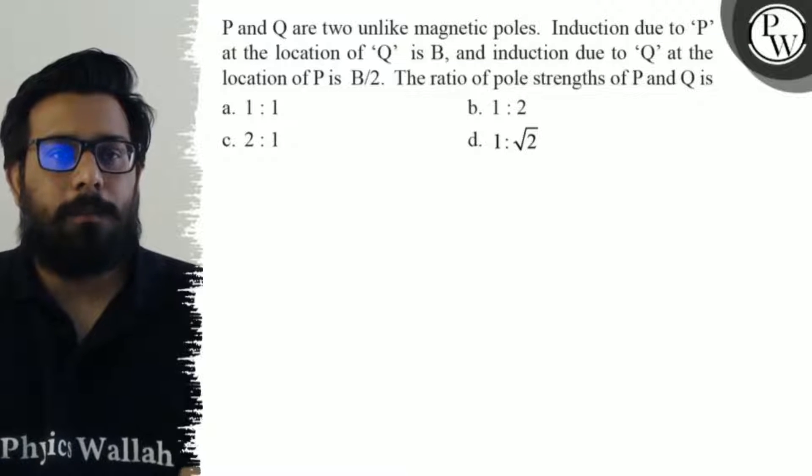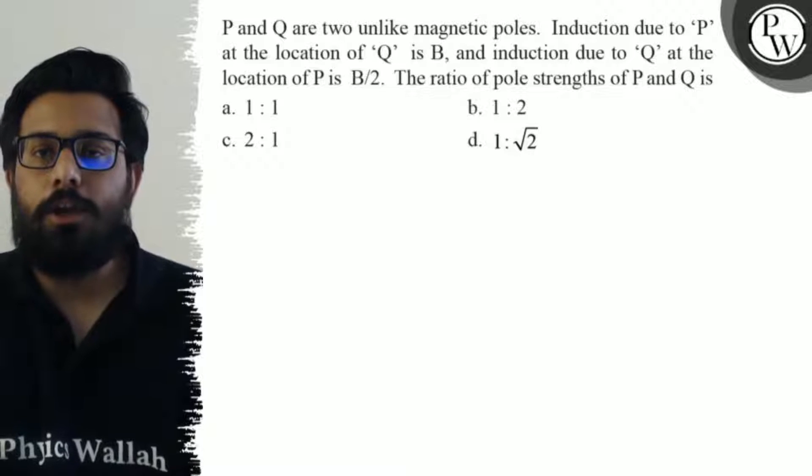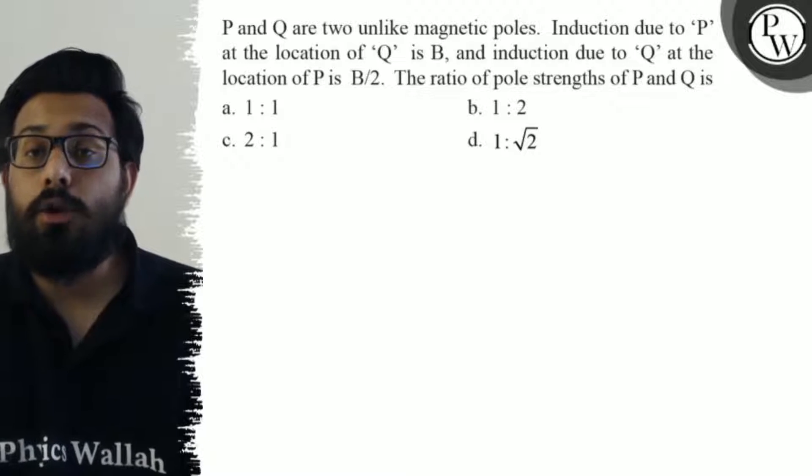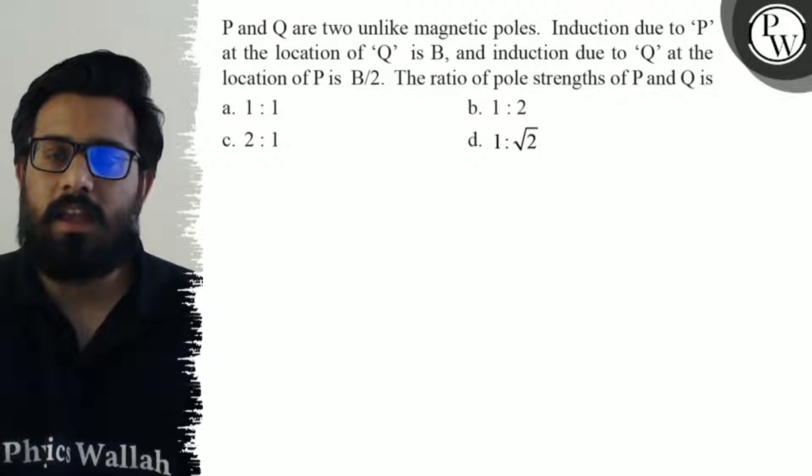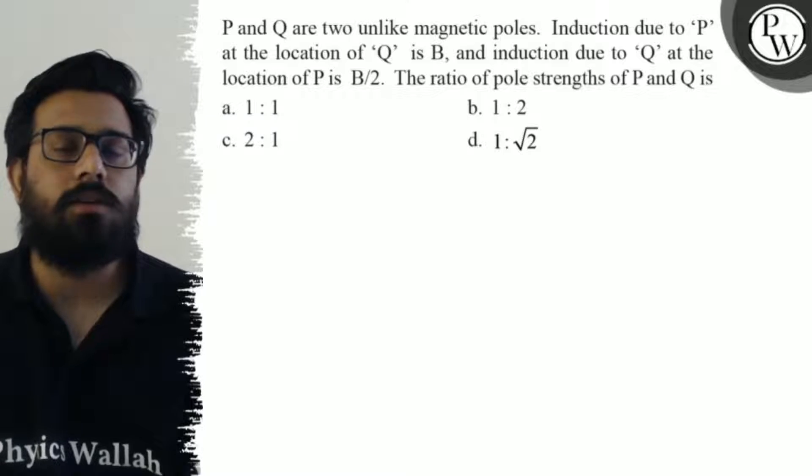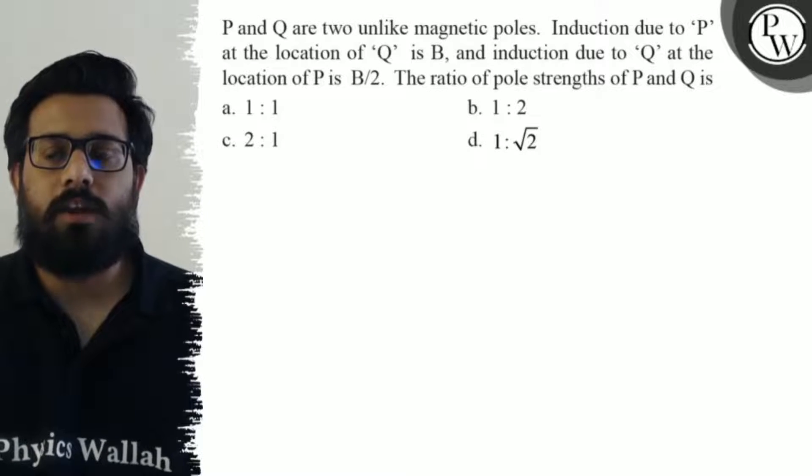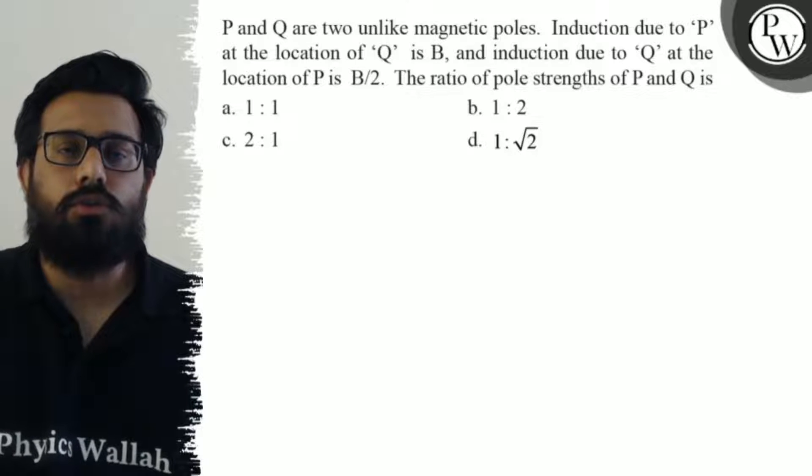Hello, so let's see the question. P and Q are two unlike magnetic poles. Induction due to P at the location of Q is B. Induction due to Q at the location of P is B/2. The ratio of the pole strength of P and Q is: first option is 1:1, second option is 1:2, third option is 2:1, and fourth option is 1:√2.